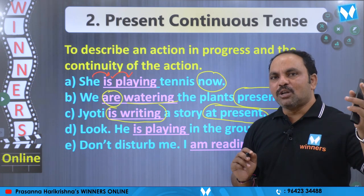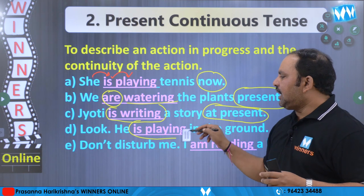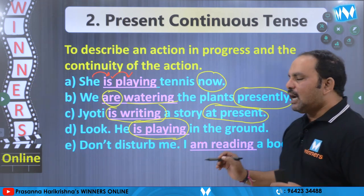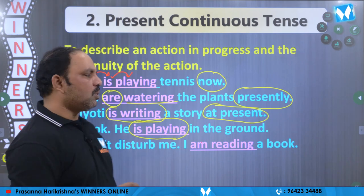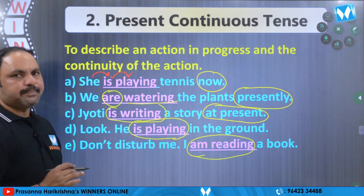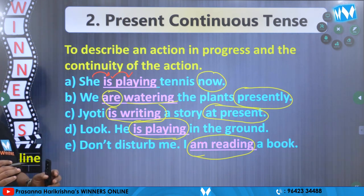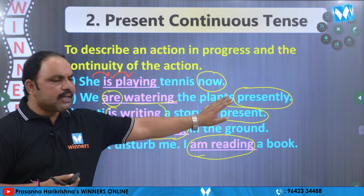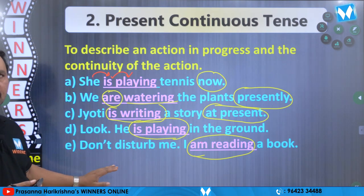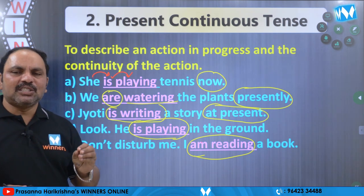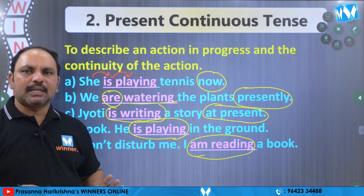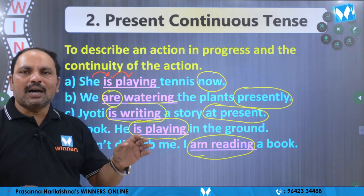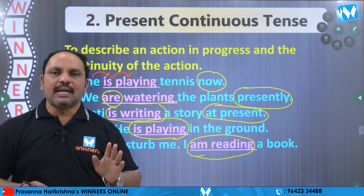Look — chudu — he is playing. Atanu ippudu garden lo aadutunnaadu. He is playing. He ane subject vachinthi kabatti, he is playing anu cheptunnaamu. Don't disturb me, I am reading a book. Yikkupundna disturb cheyyeku, nenu ippudu book chadutunna anu cheptunnaamu. E examples anni kuda prastutamu jarigedhi vantti pannulu. Clue words: now, presently, at present, look, don't disturb. E padam kandipi chayate, manam am is are plus V4 to answer raayali.